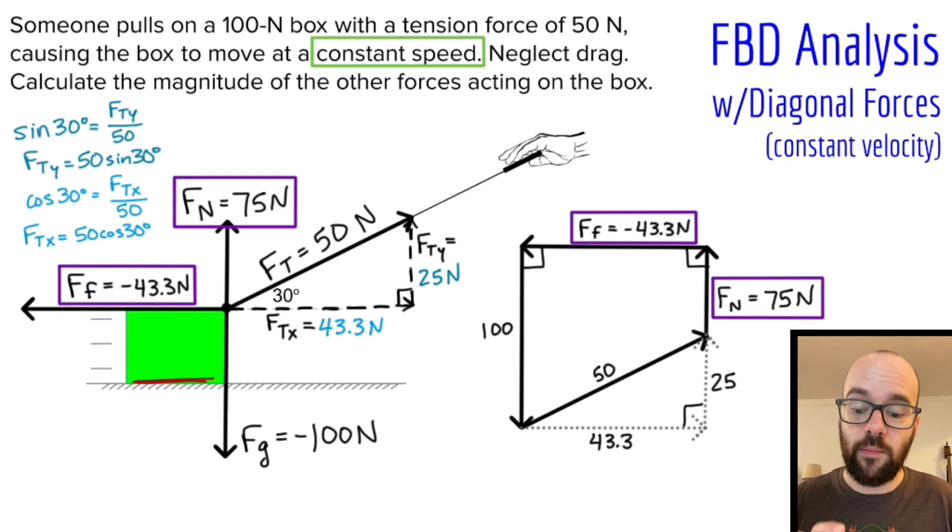So those were several methods to solve a free body diagram with diagonal forces, in this case at a constant velocity. Now, as you do more problems, you're probably going to find problems that are set up slightly different. Maybe you don't know the diagonal force and you have to solve for this force and this component force first in order to find that. But however the problem is set up, you're going to approach it the same way. You'll draw a free body diagram, you'll resolve any diagonal forces into their horizontal and vertical components, and then you'll basically ignore the diagonal vector for the rest of the problem. You'll just use its horizontal and vertical components. And from there, you'll just do your free body diagram analysis, just like you would as if you didn't have a diagonal force vector. Good luck solving free body diagrams with diagonal forces.